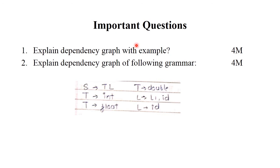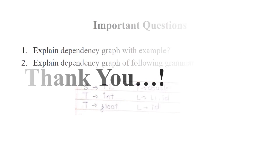An important exam question type is: explain the dependency graph for a given grammar. It is very easy to solve — you just need to know how to generate a parse tree, implement the grammar, and show arrows in the upward direction. This is all about dependency graph. Try to solve the example problem. Thank you.